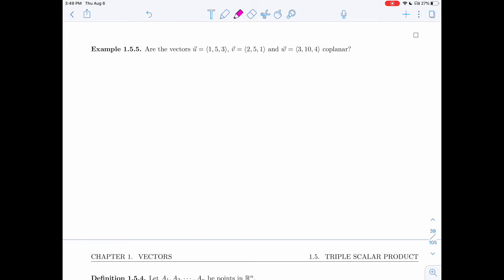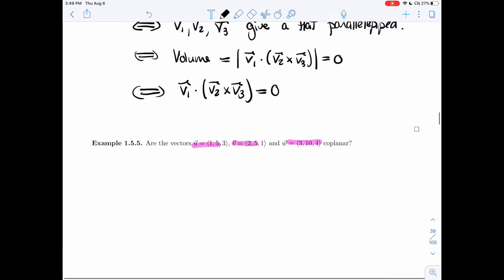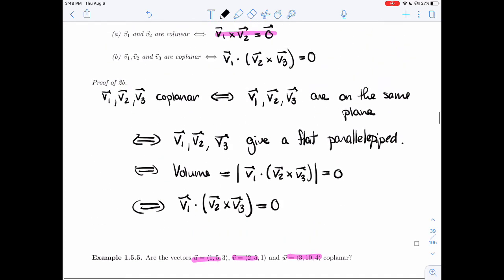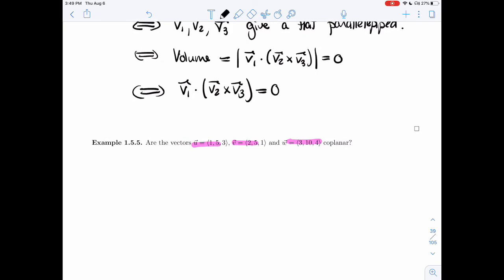All right, in example 1.5.5, we're asked to figure out if the vectors U, V, and W are coplanar. All right, so let's use the proposition we just proved. They're coplanar if the triple scalar product is 0. So all we're really looking for is the triple scalar product.